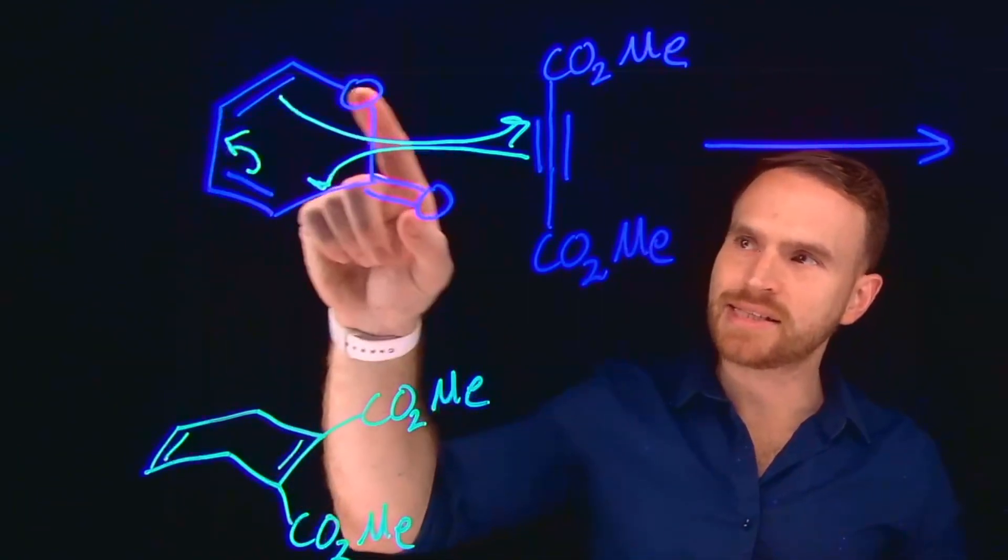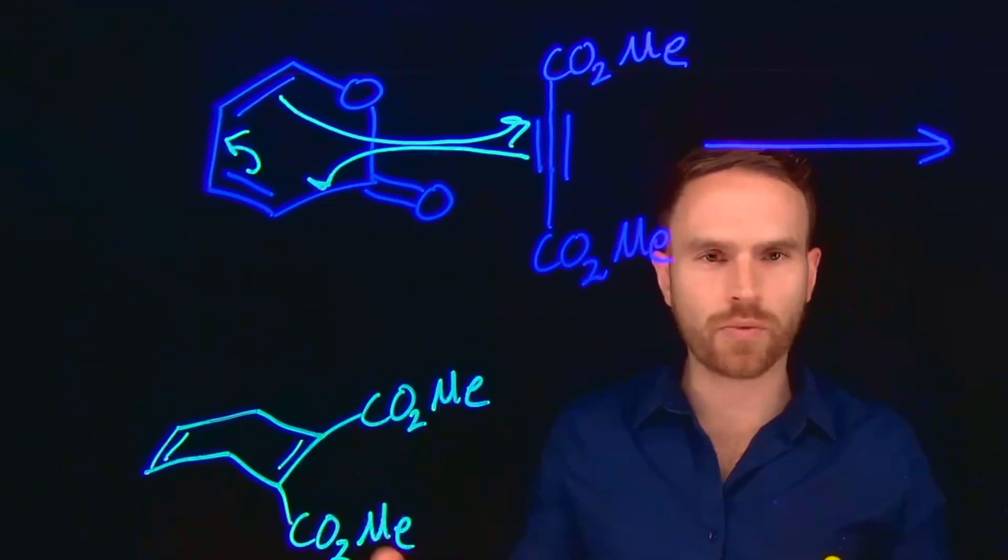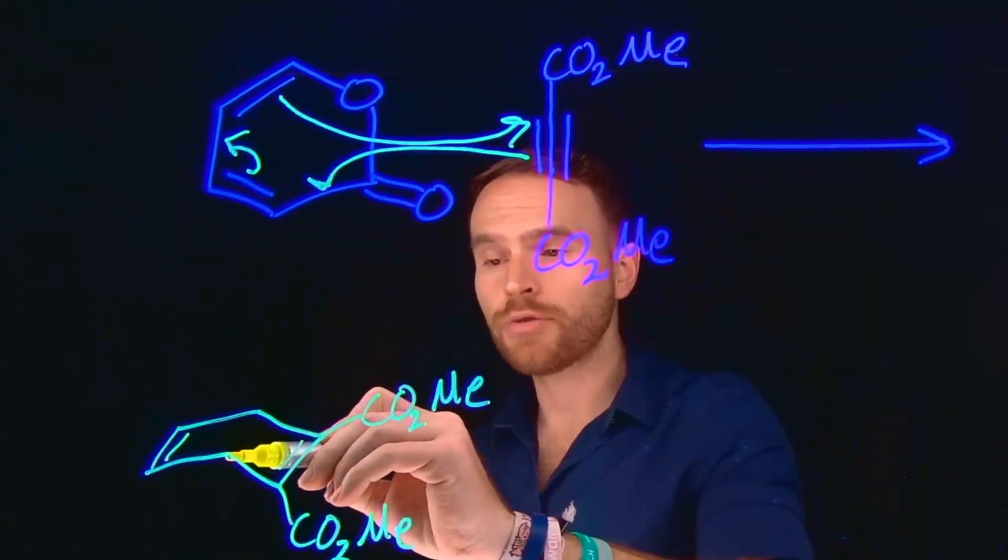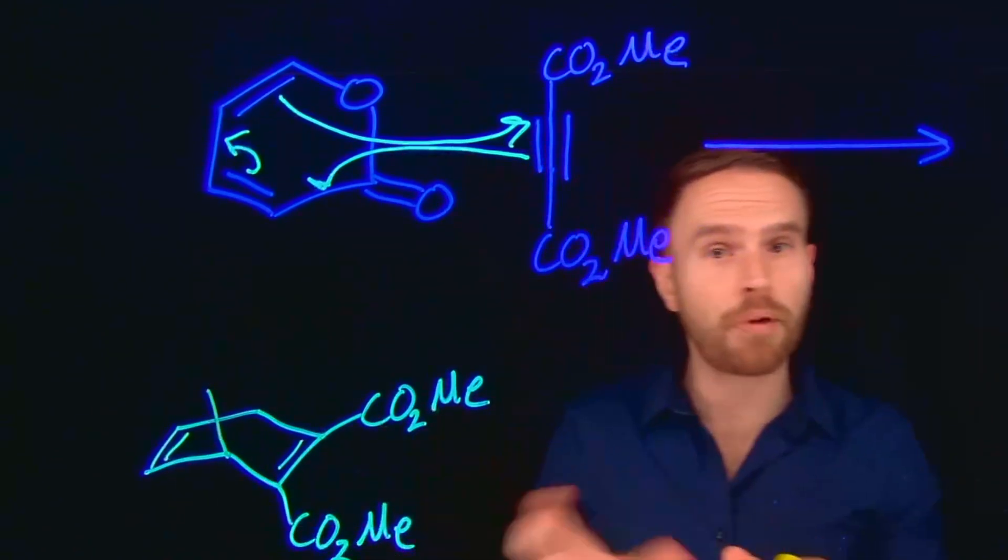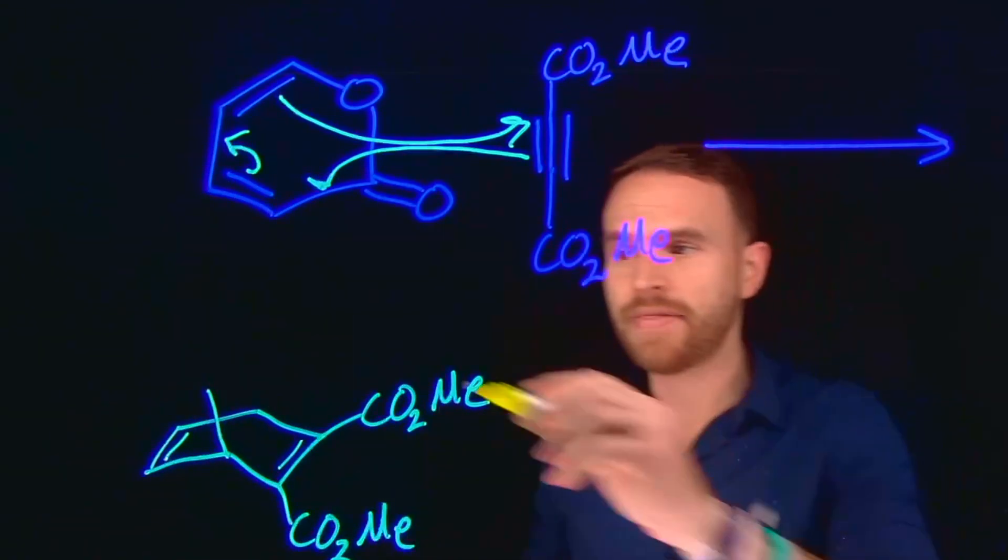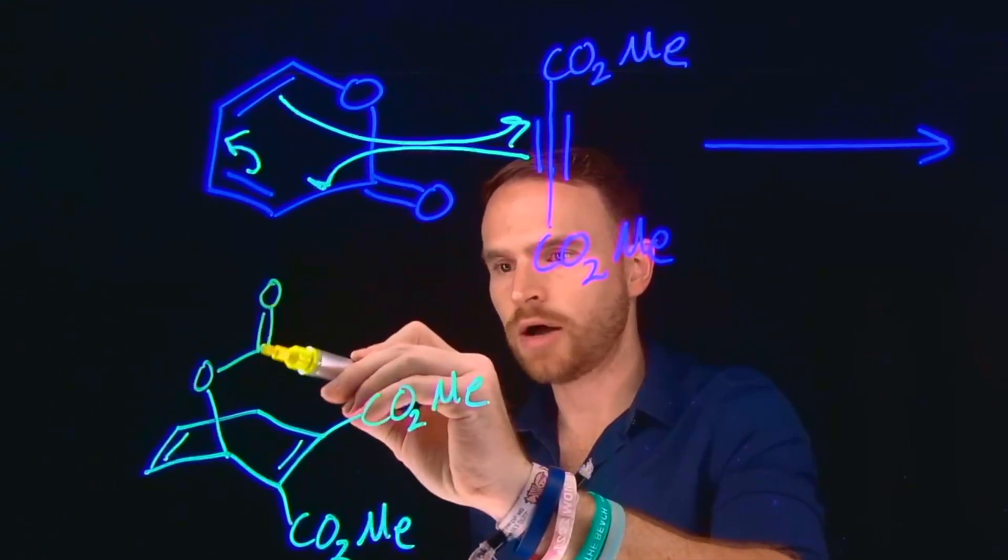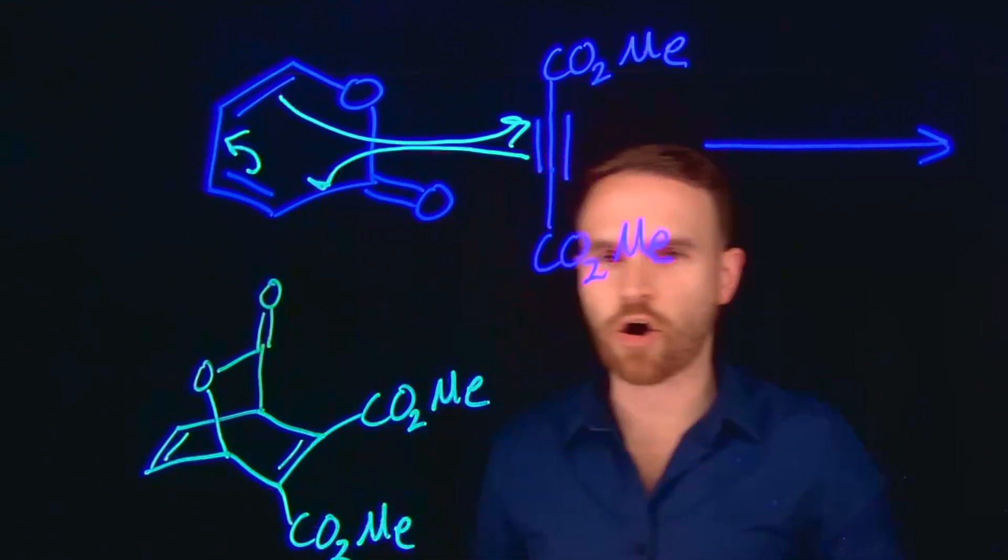However, since our diene contained already a ring system, this means that now we've generated this bicyclic fused ring system where we have another six-membered ring that is part of this ring where some of the carbons are participating in both rings. And this is because we have an oxygen here, and then this carbonyl group at this position, as well as being attached to these two carbons.